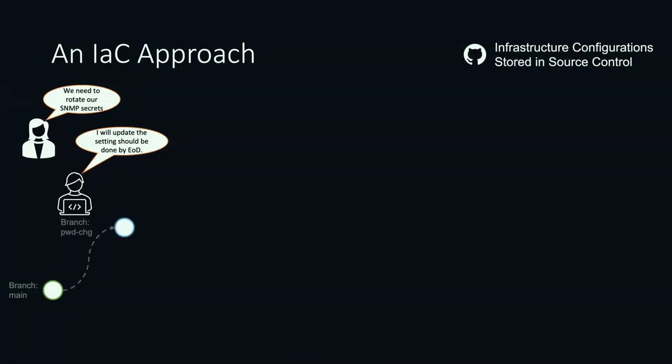I'll go and do a branch off that main one. So I have a copy of the infrastructure and I'm going to make the required change. Likely if I've done this this way, it's probably just one variable in one spot. I'll go and create that update, then push it back into our GitHub and create what's called a pull request.